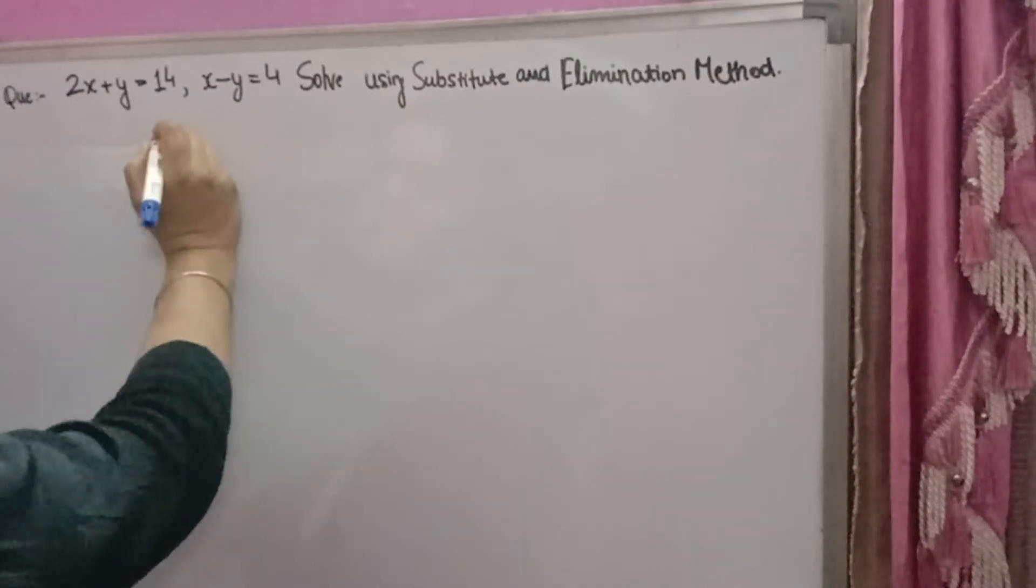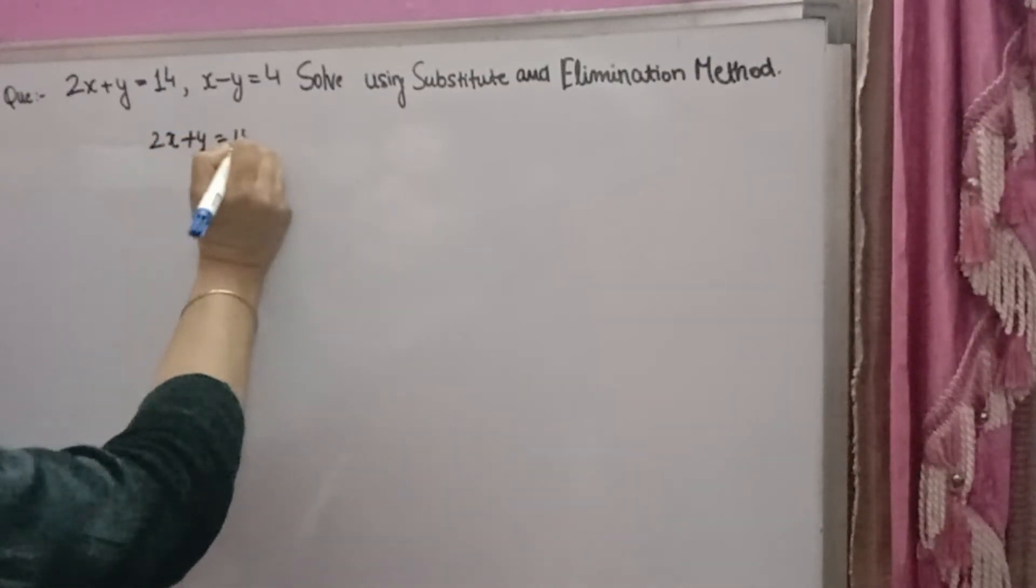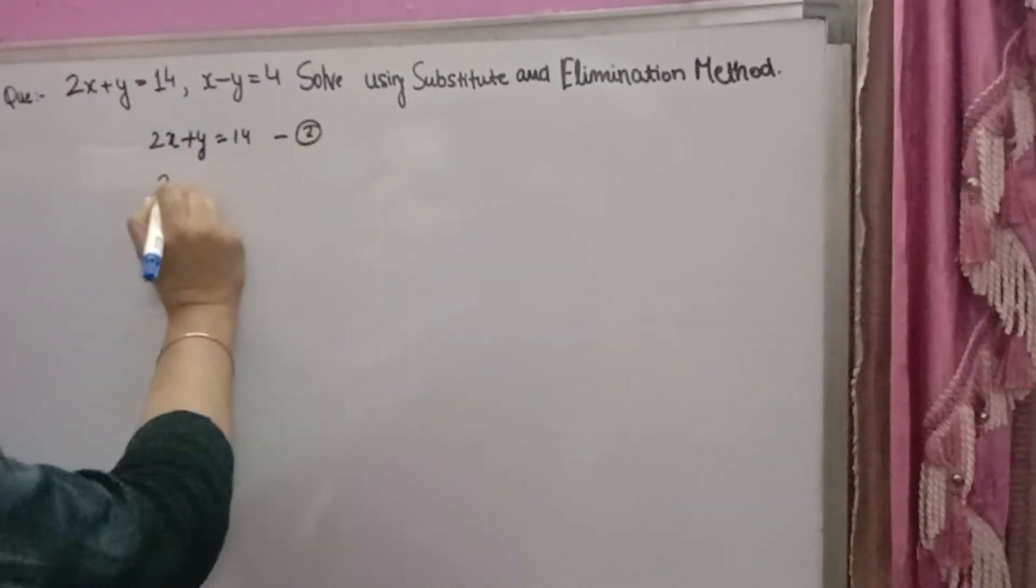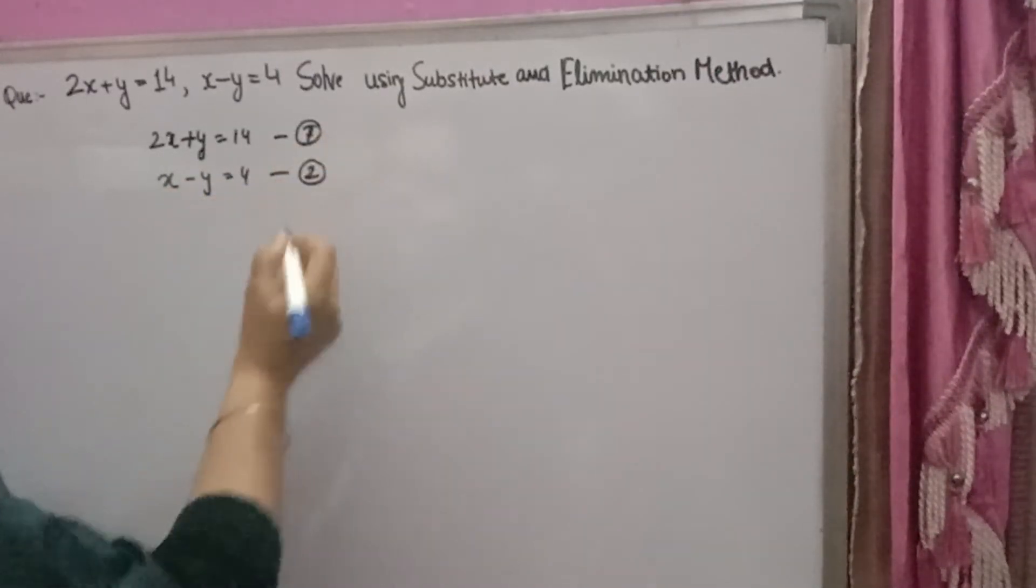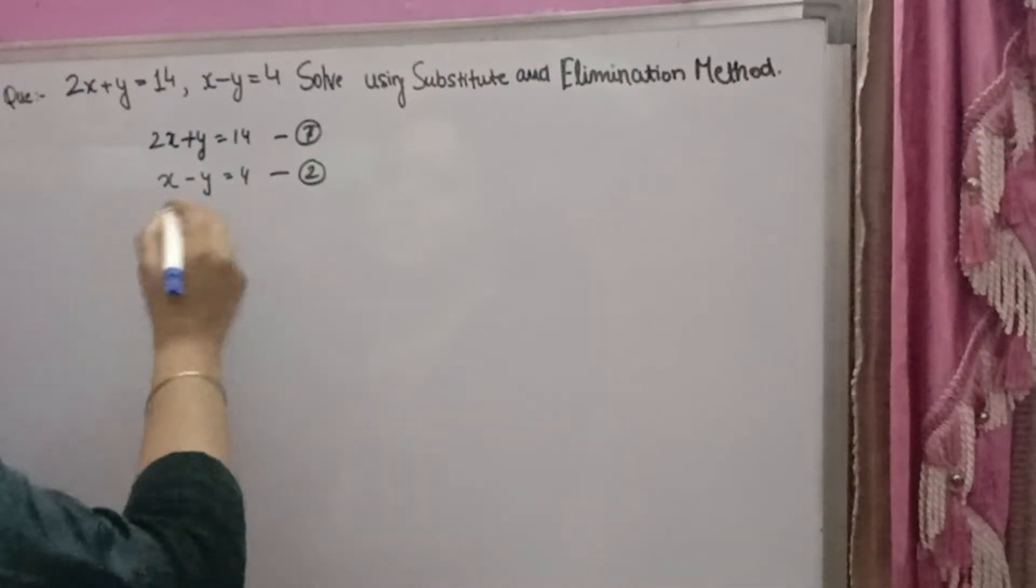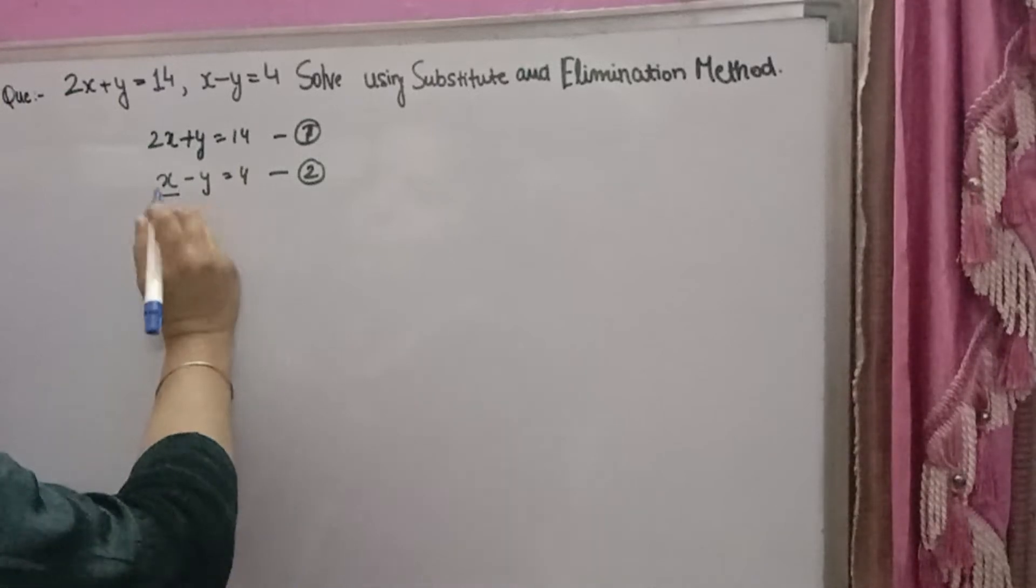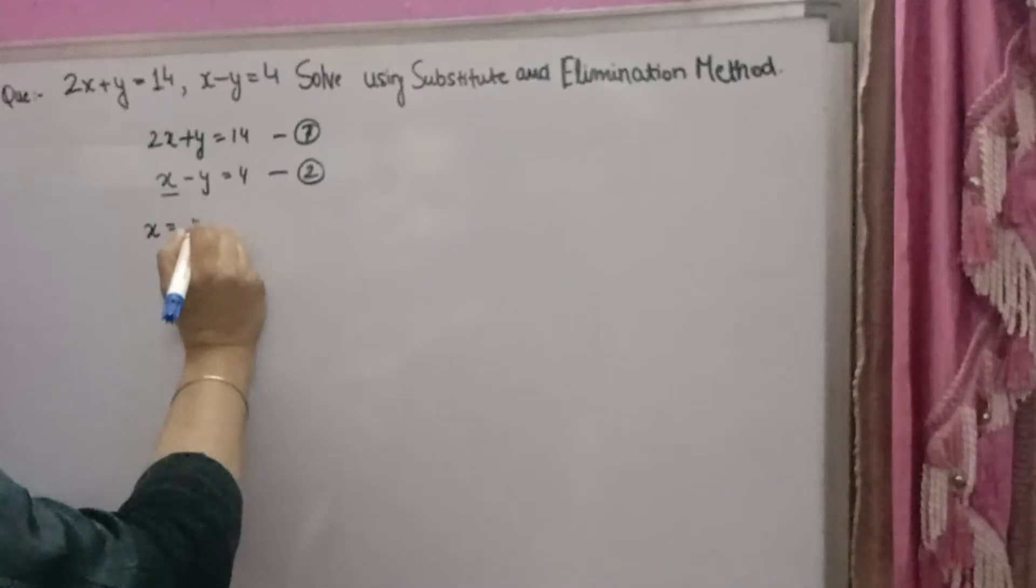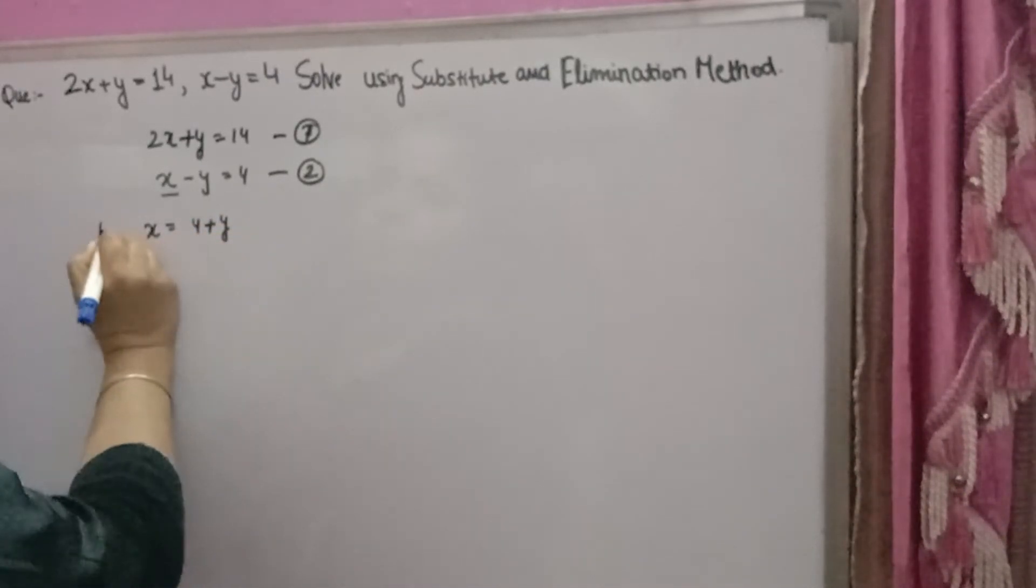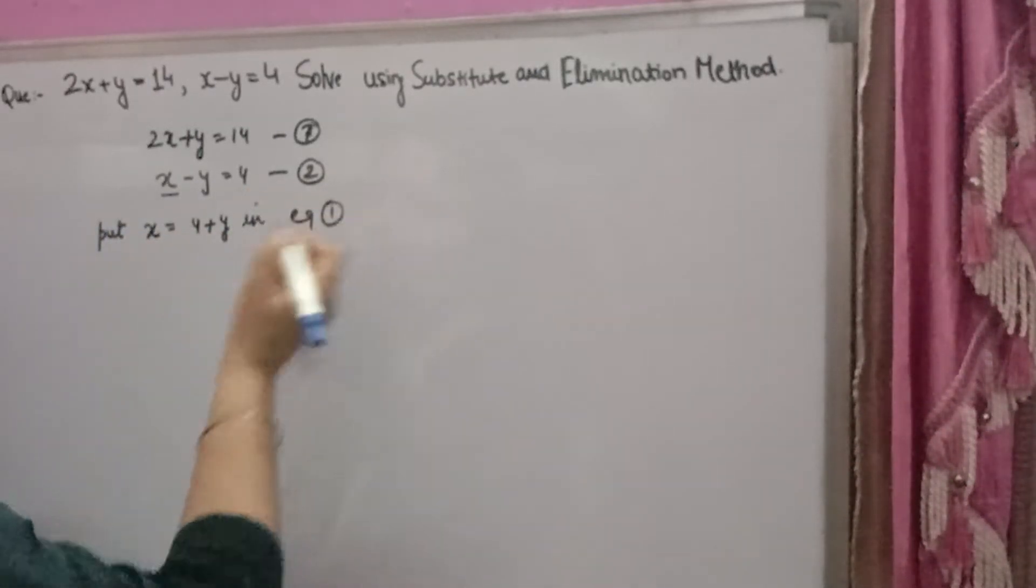Firstly, I am solving by substitution method. Two equations are given. Suppose this is the first equation, this is the second equation. In substitution method, you will take the value of x or y from one equation and put it in the second equation. I am taking the value of x from the second equation. You will get x equals y plus 4. You will put x equals y plus 4 in equation first. You can do the opposite also.